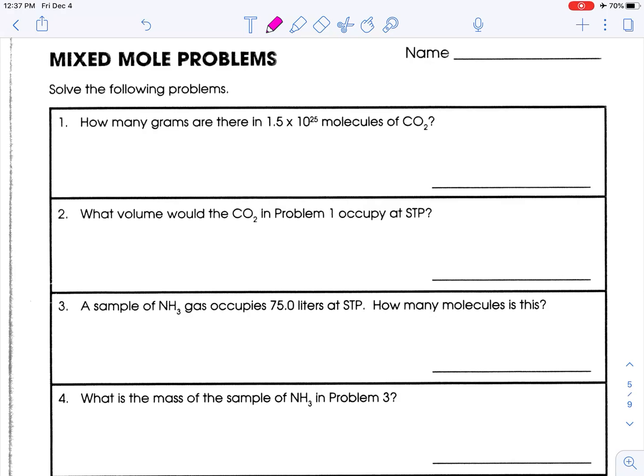How many grams are there in 1.5 times 10 to the 25th molecules of CO2? So if you're looking at your mole map, we are given molecules and we need grams. There's no direct route, so we need to go molecules to moles and then to grams. How do we go from molecules to moles? We're going to divide by Avogadro's number, so 1.5 times 10 to the 25th divided by 6.02 times 10 to the 23rd.